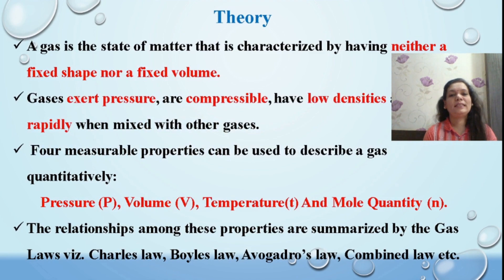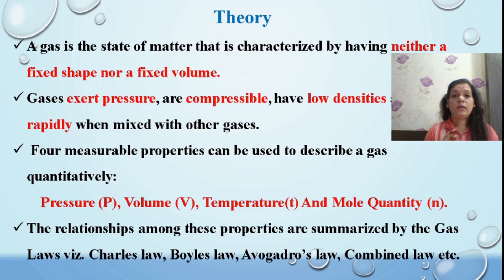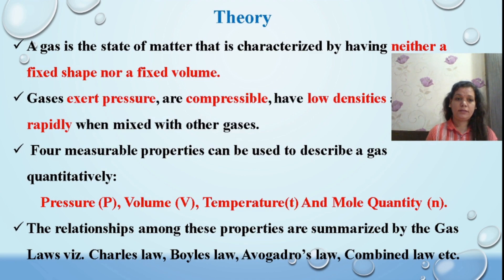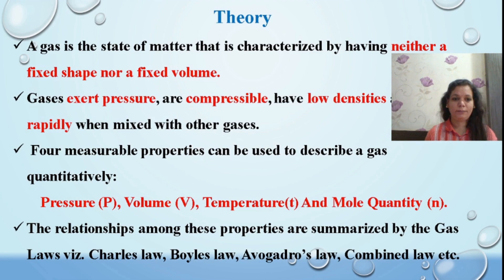We all know that gas is one of the states of matter. If you look at the properties of a gas, it neither has a fixed shape nor a fixed volume. Gas kept in a container exerts pressure on the walls. Gases are compressible, they have low density, and diffuse rapidly, mixing with other gases. These properties are described quantitatively using pressure, volume, temperature, and mole quantity, and are explained by laws like Charles's law, Boyle's law, Avogadro's law, or the combined law.